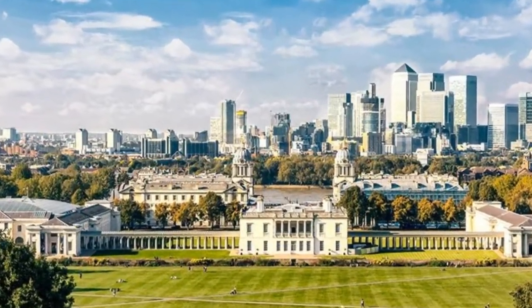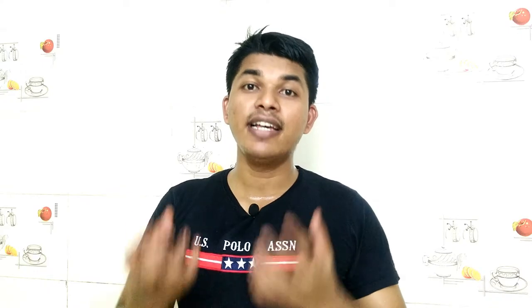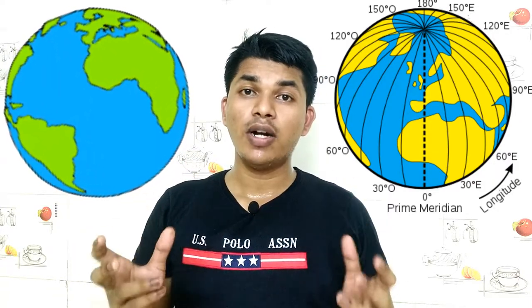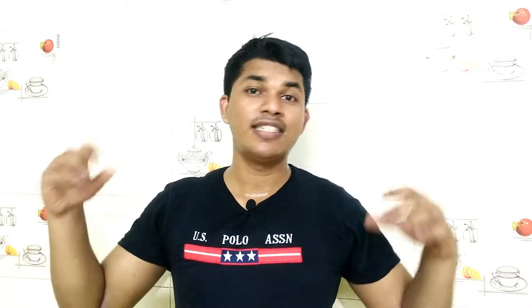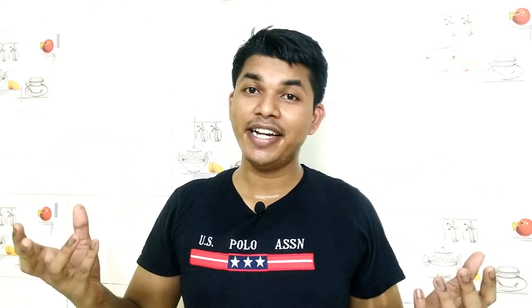Using the prime meridian, the time of the Greenwich laboratory, which is located in England, is used as a reference. After that, the earth is divided into sections of each 15 degrees. The earth takes one hour to complete each 15-degree section, so that each country has different timings.